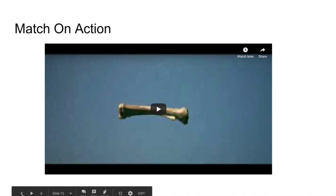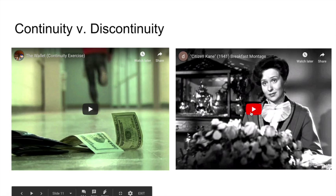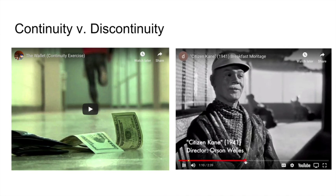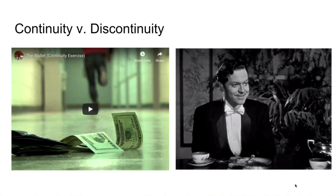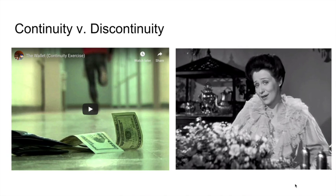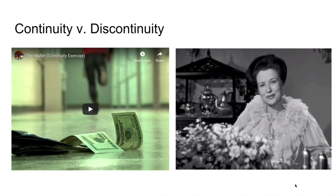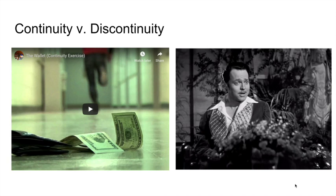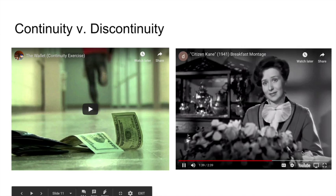Discontinuity is meant to be choppy and apparent. This technique is often used to show emphasis on some sort of change that happens during the time lapse in between shots. A classic example of this is the breakfast montage from Orson Welles' Citizen Kane. The changes in between scenes are fast and apparent, and in this particular scenario it is shown to show the audience how fast somebody can lose everything around them. Pay attention to the clothes that these characters are wearing, and you will see that every time the screen blurs like this, it fast forwards through time.